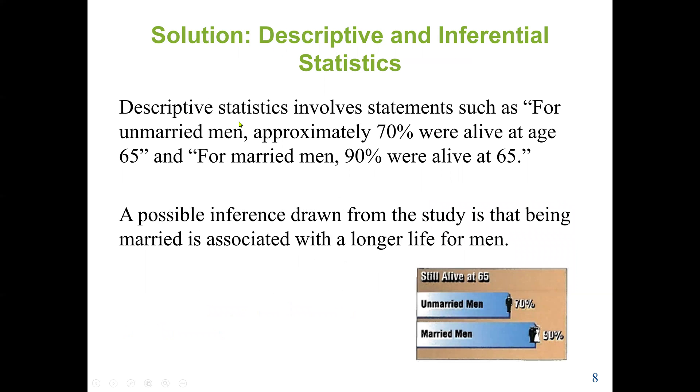The descriptive statistics involves a statement such as for unmarried men, approximately 70% were alive at the age of 65, and for married men, 90% were alive at the age of 65. A possible inference drawn from the study is that being married is associated with a longer life for men.